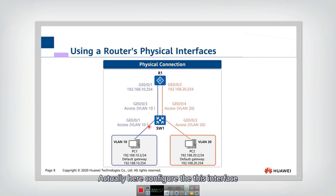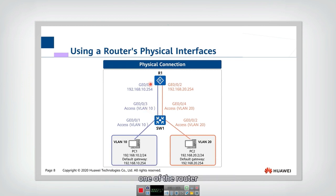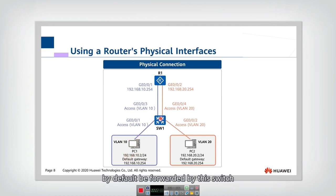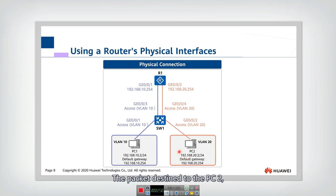This interface is configured as access type, allowing only VLAN 10 packets. The outgoing interface is also access type allowing only VLAN 10, and it is connected to interface 1 of the router. By configuring the default gateway of PC1 to be interface 1 of the router, packets from PC1 will by default be forwarded by the switch to the router's interface. The router then looks up its routing table to check which outgoing interface the packet destined to PC2 should be forwarded to.